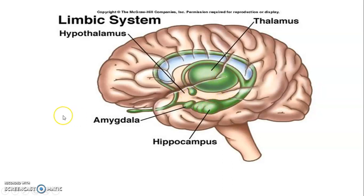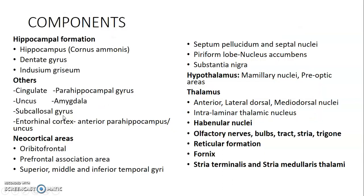The components of the limbic system include the hippocampal formation. When asked to list three parts that form the hippocampal formation, we have the hippocampus, dentate gyrus, and the indusium griseum.